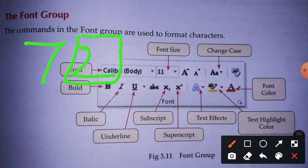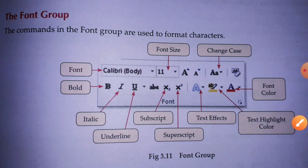Press the Superscript button and automatically your number will look like 7² — seven squared. Superscript makes your character or number appear above the normal text line, while subscript makes it appear below. This is how we use subscript and superscript.